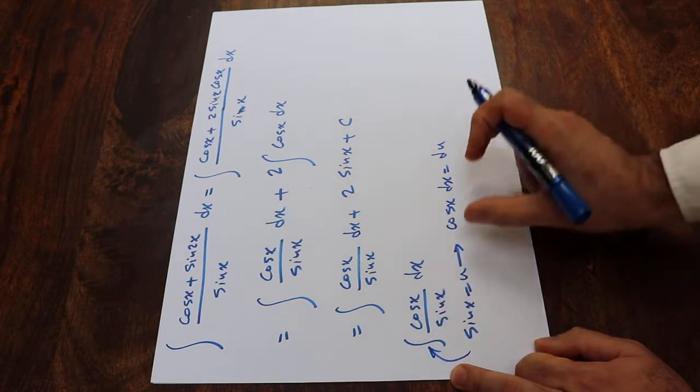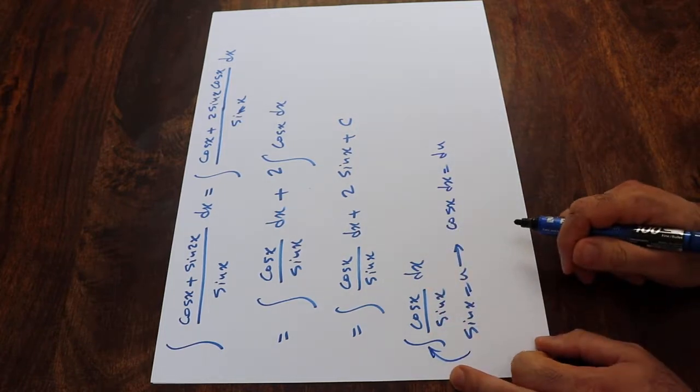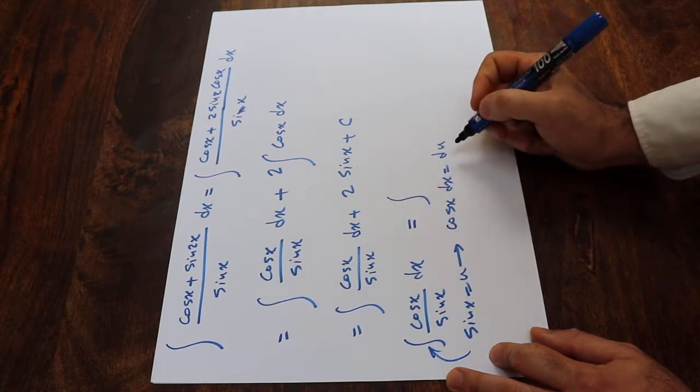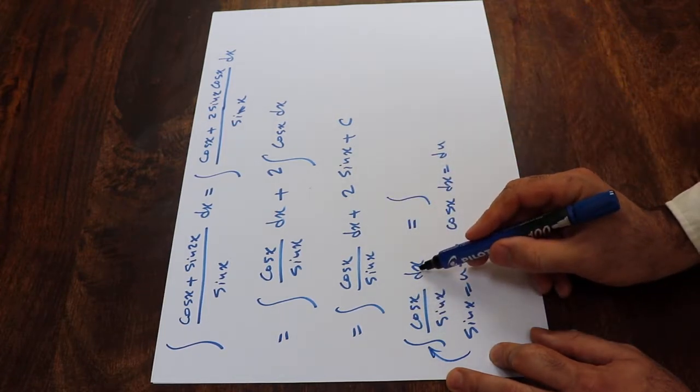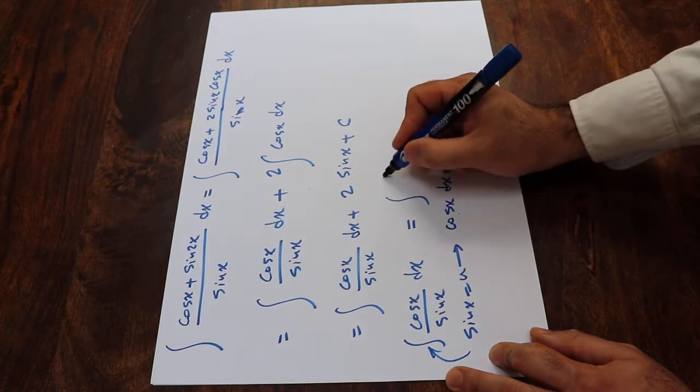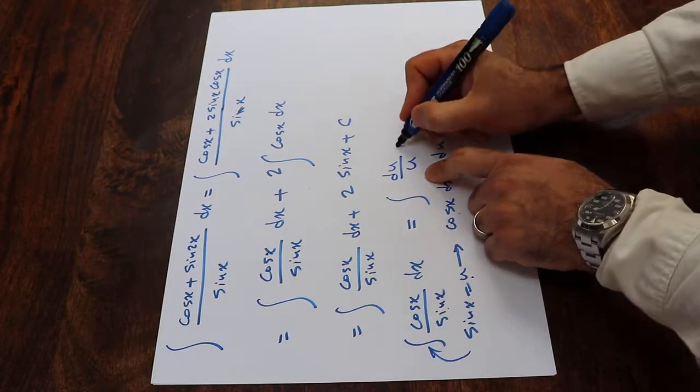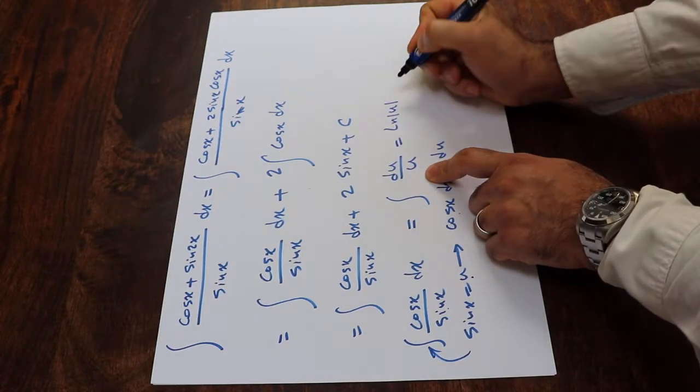All you need to do here is to substitute these two terms into this integral. And if you do that, this integral will be equal to integral of, instead of cosine x dx, I write du, and instead of sine x, I write u. And we know integral of du over u is equal to ln u.